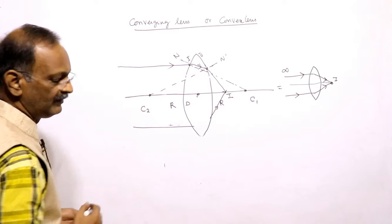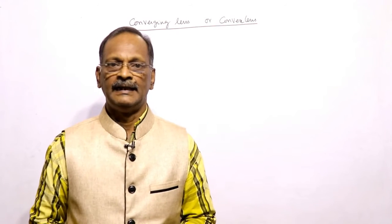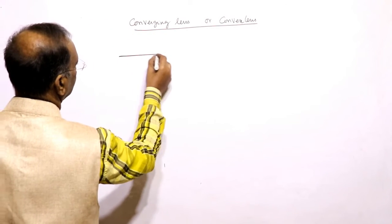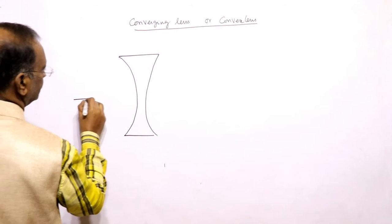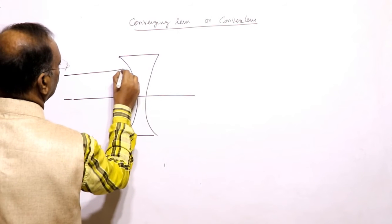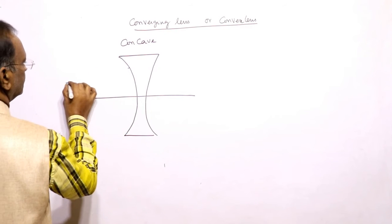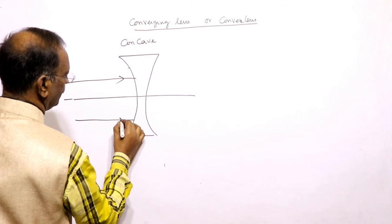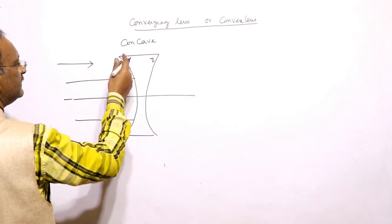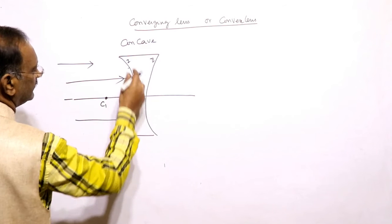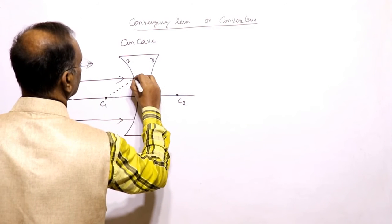Now let's talk about the concave lens — the diverging action of a concave lens. Let's take the concave lens. We take rays coming parallel to the principal axis. This is the first surface and this is the second surface. The center of curvature C1 is here for the first surface, and for the second surface the center of curvature is here. We draw the normal at the point of incidence on the first surface.